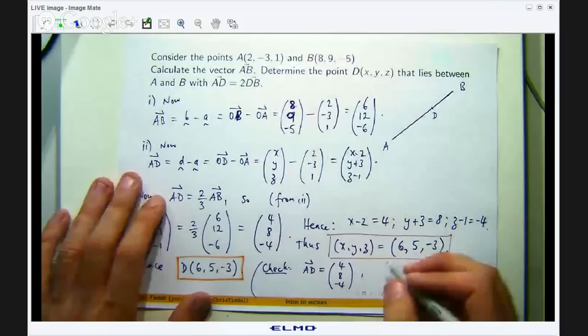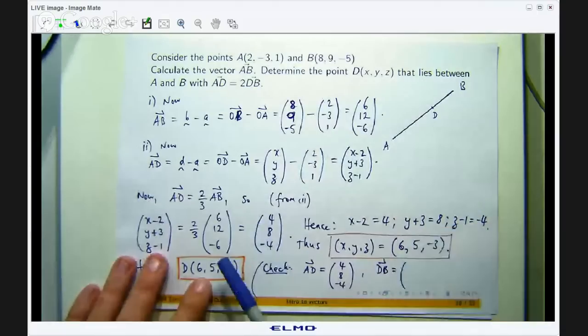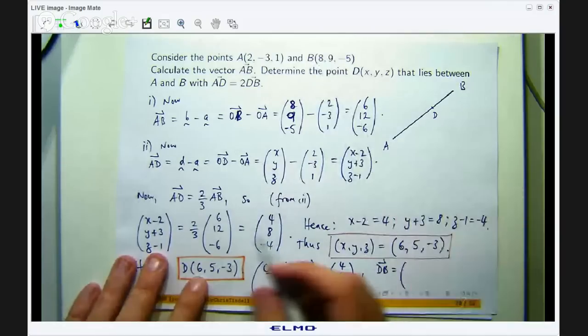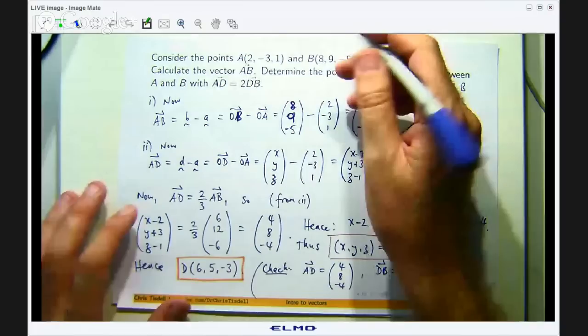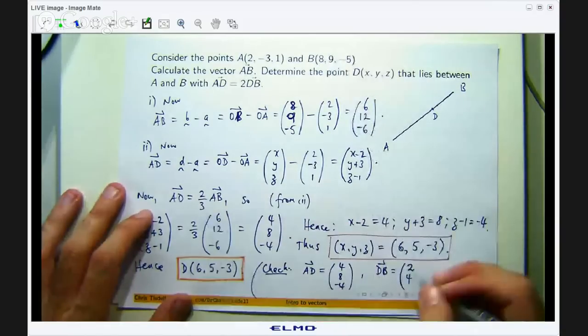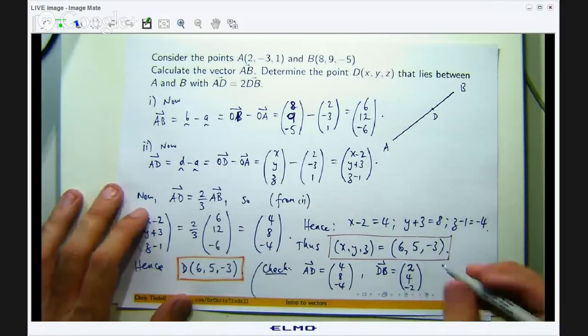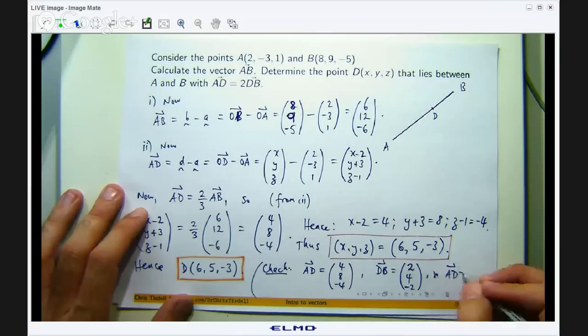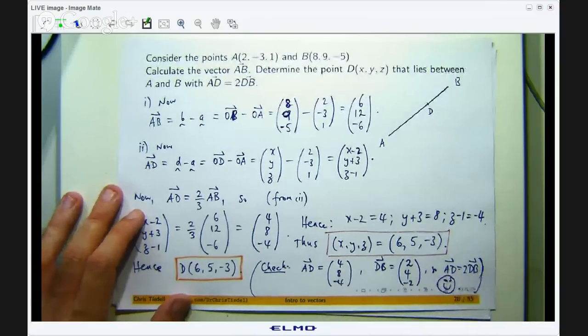DB is going to be the position vector of D minus the position vector of B. So we are going to get that minus that, which is 2, 9 minus 5, which is 4, and negative 5 minus negative 3, which is negative 2. Okay. So you can see that AD is twice this vector. So we are happy.